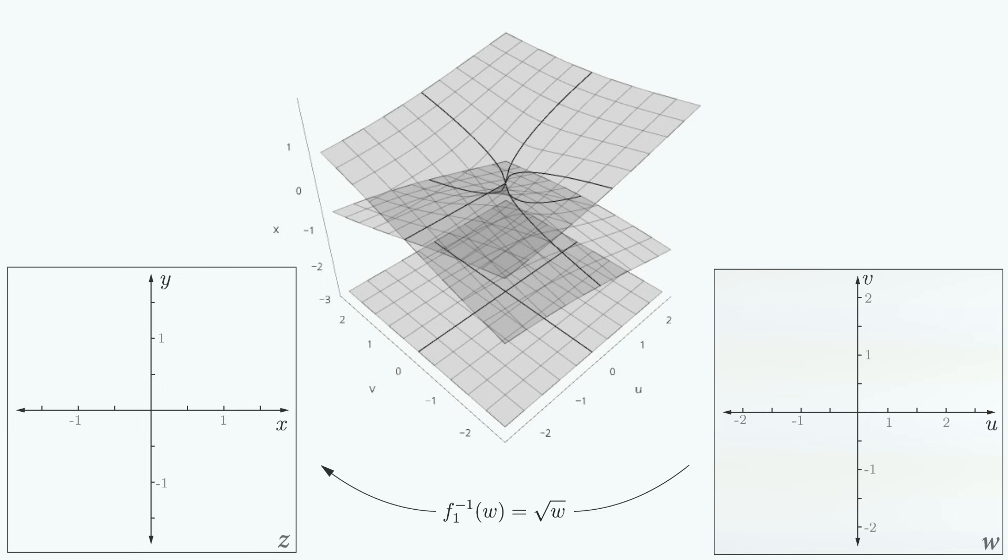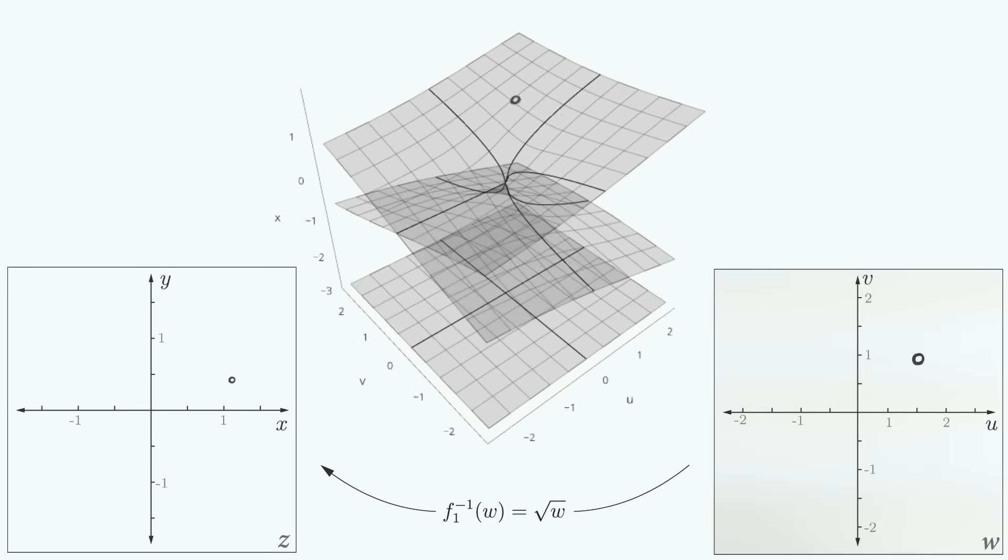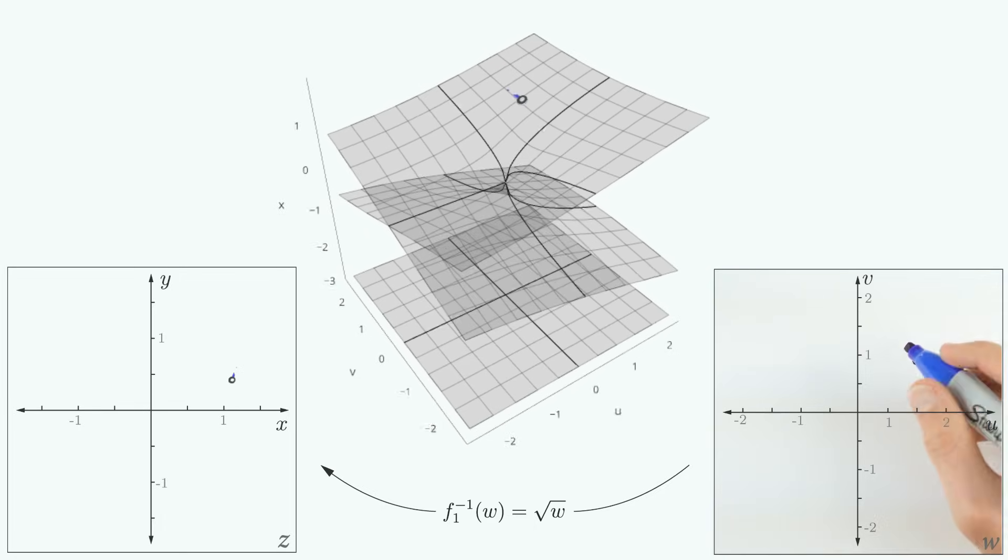Alright, ready? We'll draw the same exact paths on W and see how they show up on our Riemann surface as they are mapped to our Z plane.